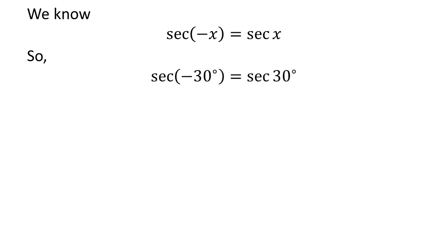Let us apply the above identity for secant of minus 30 degrees. Here x is 30 degrees. So secant of minus 30 degrees is equal to secant of 30 degrees.